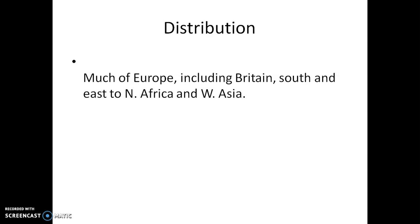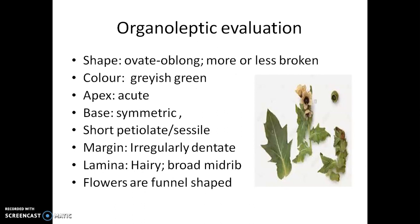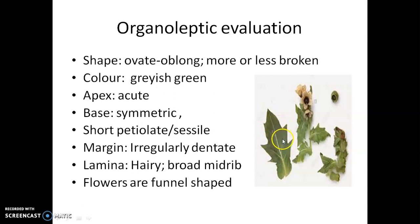The next section is organoleptic evaluation. In this section we mainly concentrate on the leaves' organoleptic evaluation because this part is mostly used. The leaf shape is ovate to oblong; mostly in dry condition it is available in a broken state. The color is grayish green, and the apex is acute.